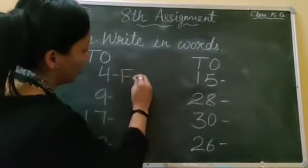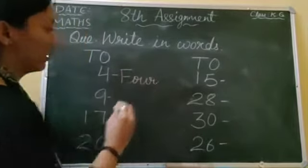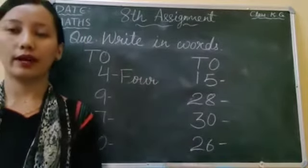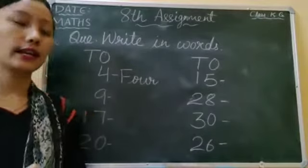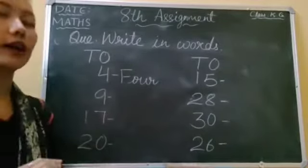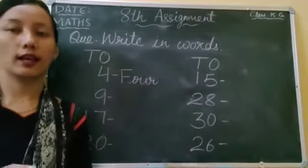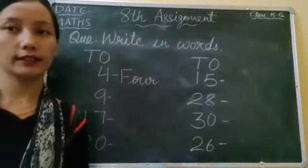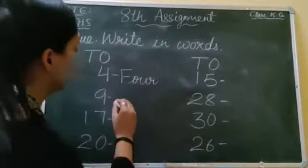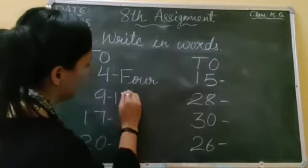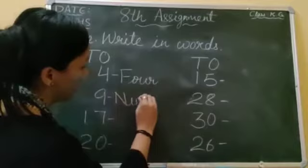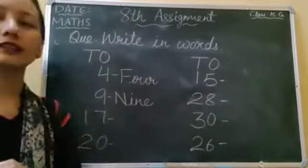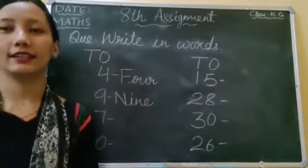The spelling of 4 is F-O-U-R. Very good. Now next we have number 9. Tell me, what is the spelling of 9? N-I-N-E. Nine.